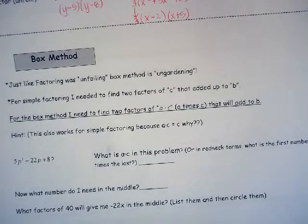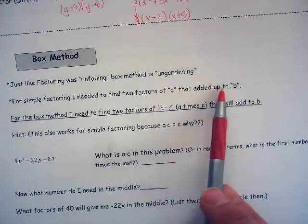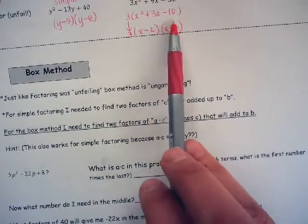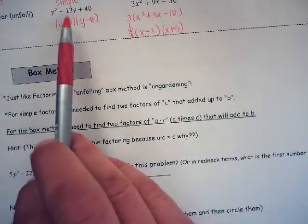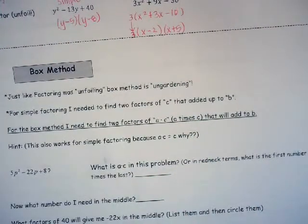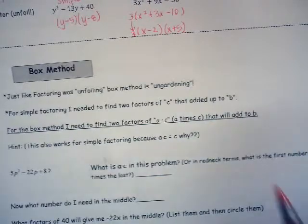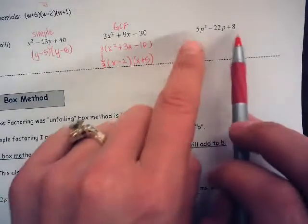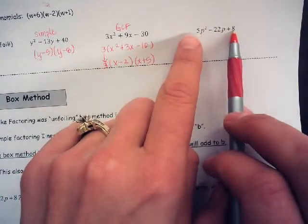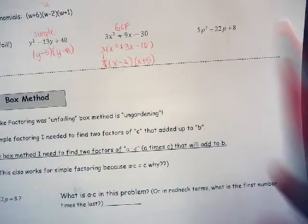For simple factoring, I needed to find two factors of C — my last term — that add up to B, my middle term. For the box method, I need to find two factors of A times C that will add to B. That means I take A times C — so 5 times 8 — and find two factors of that number that add to negative 22.